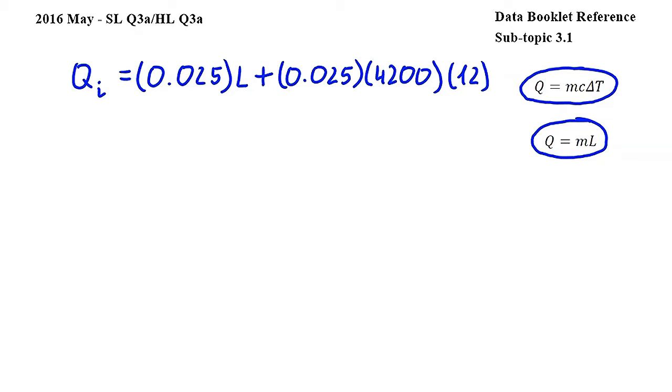Carrying out the calculation and simplifying we get QI is equal to 0.025 L plus 1260. So this is the energy gained by the initial ice cube during the process.